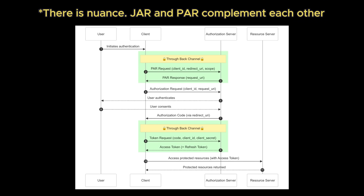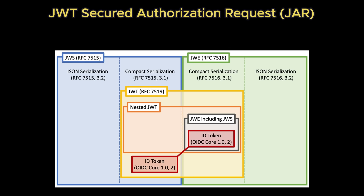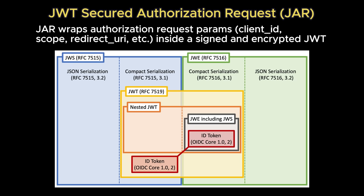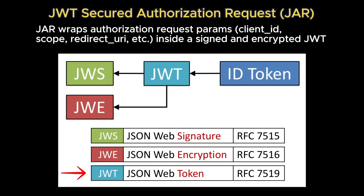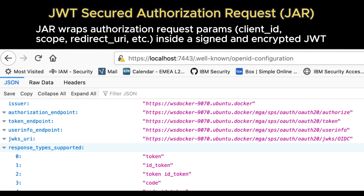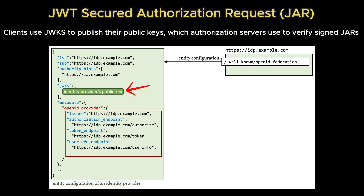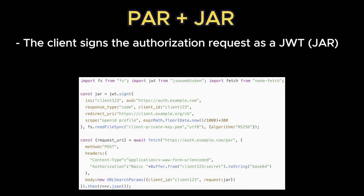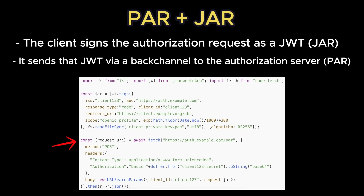JAR — JWT Secured Authorization Request, RFC 9101 — is another way to solve this same problem. Instead of pushing the parameters, it bundles them into a signed and/or encrypted JSON Web Token. The client app creates a JWT containing all the authorization parameters like scope and redirect URI as claims. This JWT is signed, becoming a JWS or JSON Web Signature, which secures the JWT's claims with a digital signature or MAC, proving integrity and authenticity. You can optionally encrypt it to make it a JWE or JSON Web Encryption, which hides its contents. The client sends this JWT to the /authorize endpoint as a single request parameter, and the server verifies the signature to ensure parameters haven't been tampered with. Note that PAR and JAR can be used together — a client can push a JAR to the PAR endpoint, providing the highest level of security and integrity for the request.